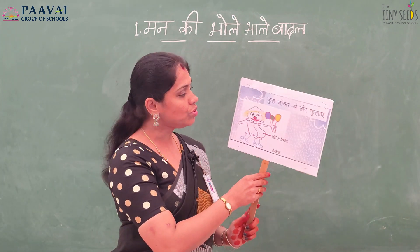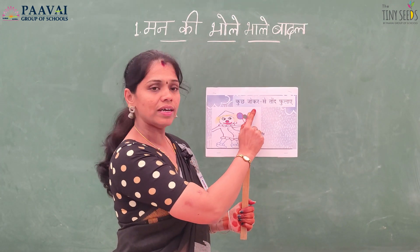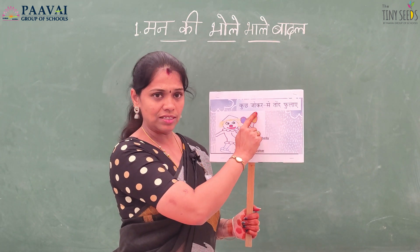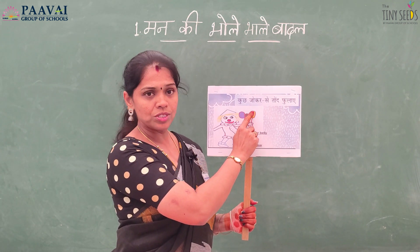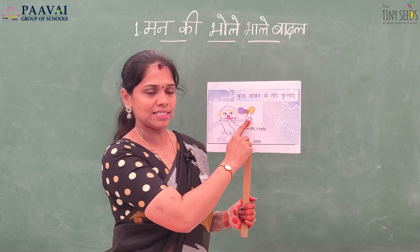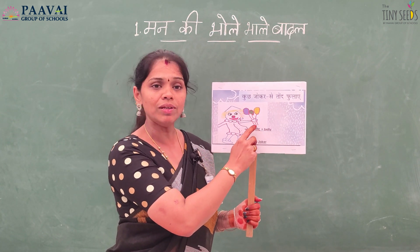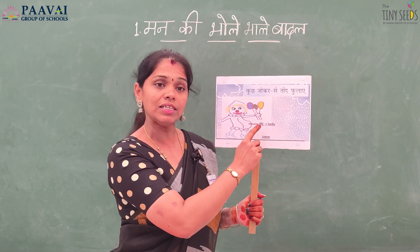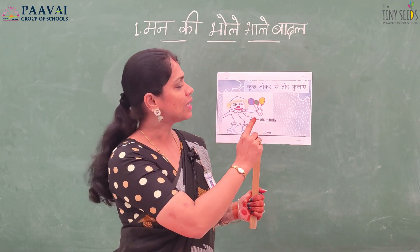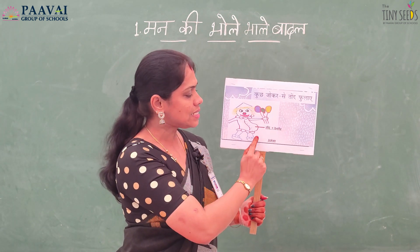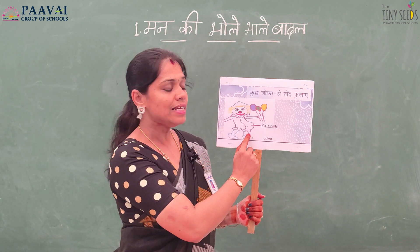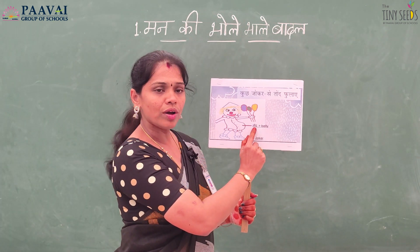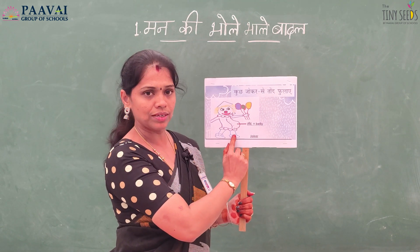Kudh jokar se tond fulaye. Kudh jokar — have you ever seen the jokar? Yes, of course, jokar will be in the circus. He will be having a very big belly. With the belly only he will come and he will make us laugh. In the same way, the poet is just telling that some clouds look like the tond. Tond means the belly of the jokar.